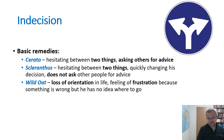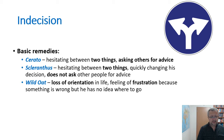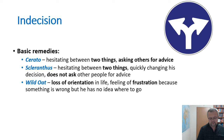The main difference between Cerato and Scleranthus is that with Scleranthus, the person does not ask other people for advice. The third remedy, Wild Oat, is different because the person doesn't decide between two options — they have lost orientation in their life generally and feel frustration because something is wrong but they have no idea where to go. They are often talented and would like to use their life as well as possible, but suddenly don't know which direction to take.